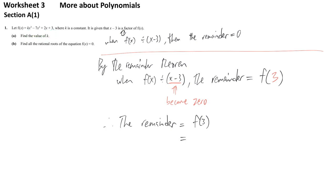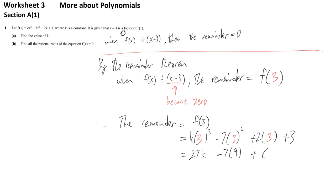We calculate f(3) by substituting x equals 3 into the given function: k times 3 cubed minus 7 times 3 squared plus 2 times 3 plus 3. Remember to write out all brackets first before substituting. So we get 27k minus 7 times 9 plus 6 plus 3, which gives us 27k minus 63 plus 9, and that simplifies to 27k minus 54. We have successfully used remainder theorem to express the remainder in terms of k.